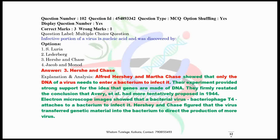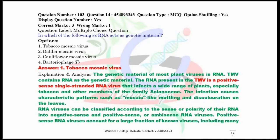Question number 102: The infective portion of a virus is nucleic acid, and this was discovered by Hershey and Chase. Question number 103: In which of the following does single-stranded RNA act as genetic material? Among the four options, the correct answer is tobacco mosaic virus.